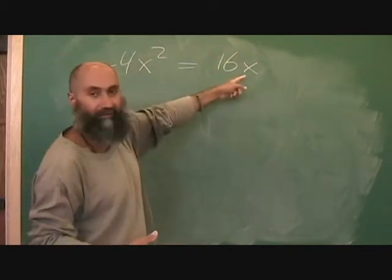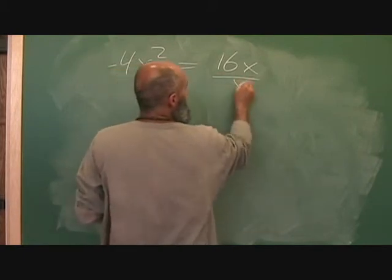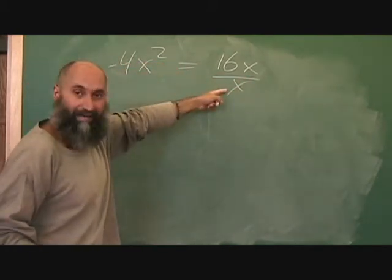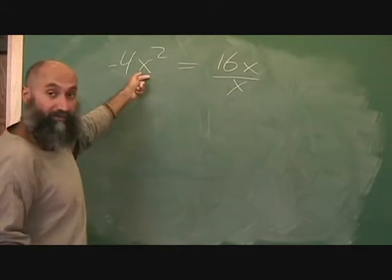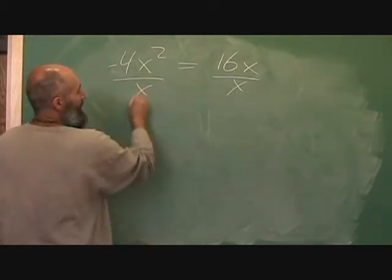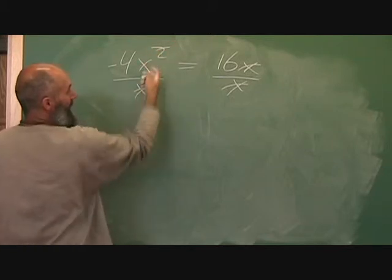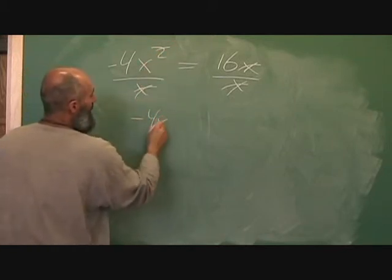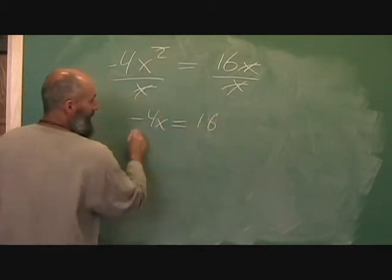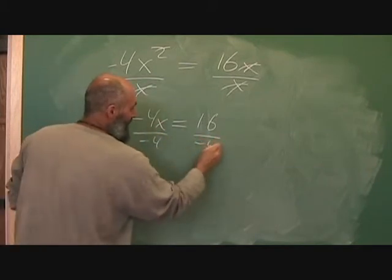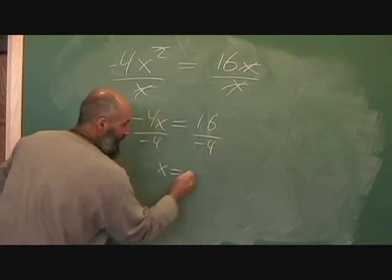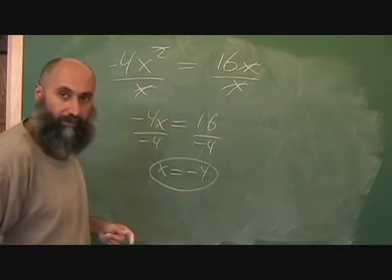And that would get rid of one of my x's. Again, you can do anything to an equation as long as you do it to both sides. So I can do anything to this as long as I do the same thing to this. So I want to get rid of that x, so I'm going to divide by x. If I'm dividing that by x, this side by x, I have to divide this side by x. So this kills this, and this reduces this down to x to the power of 1. So you've got negative 4x is equal to 16, and then divide by negative 4, divide by negative 4. So x is equal to negative 4, and that's your solution.